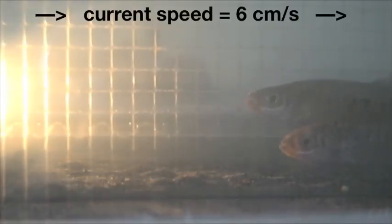In this laboratory flume, the current is flowing from left to right at a speed of 6 centimeters per second.